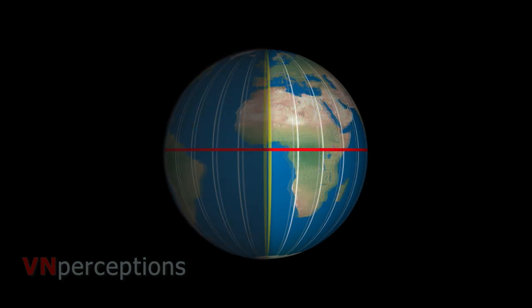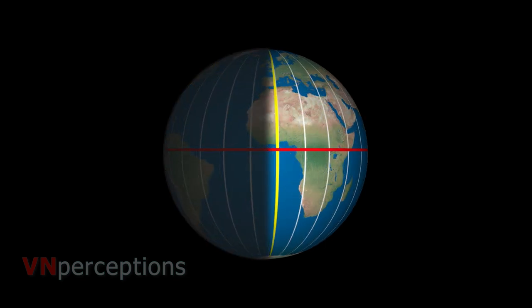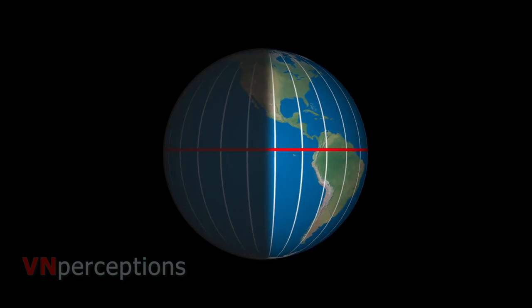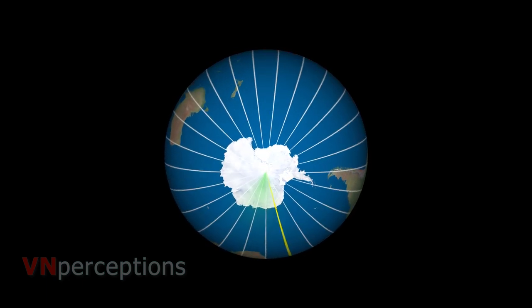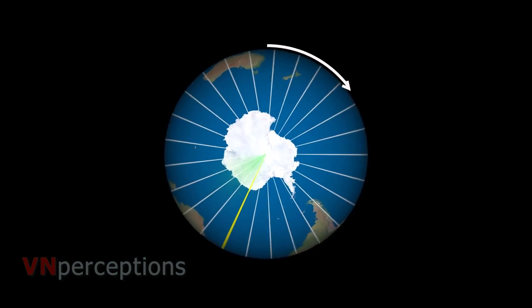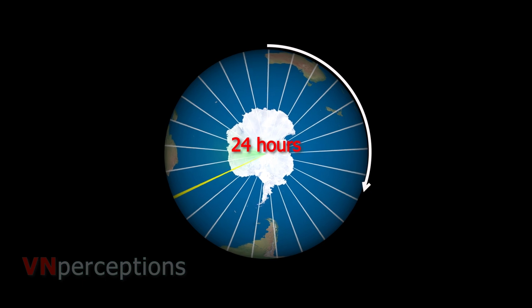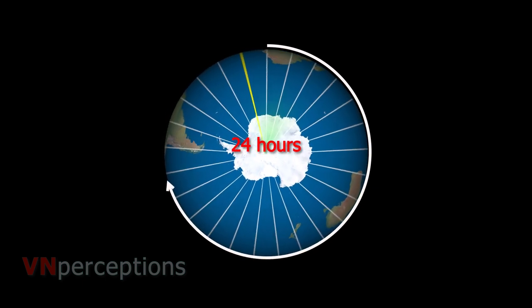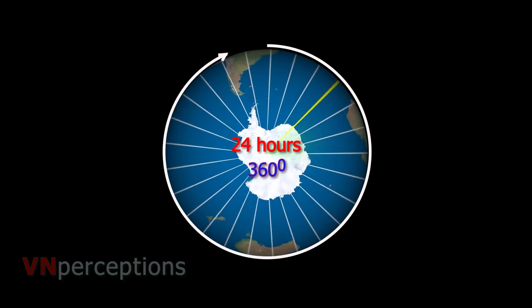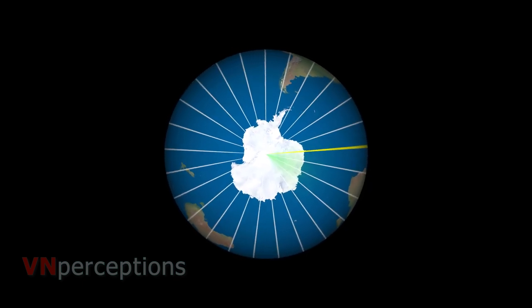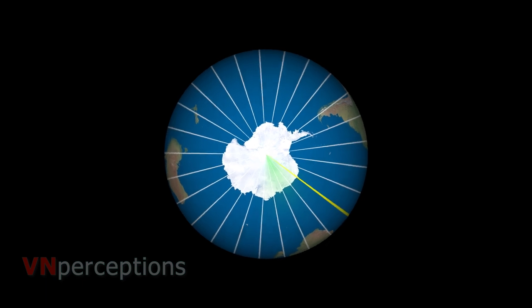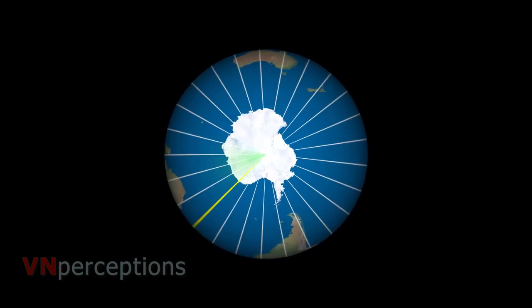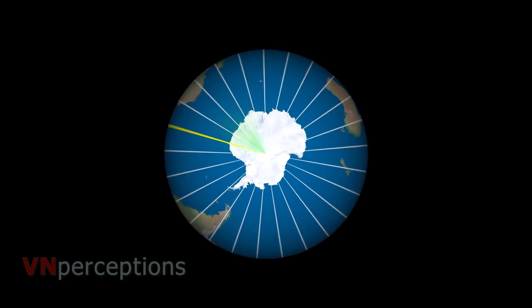As the earth rotates, every place has its sunrise, sunset and noon. The earth completes one rotation in approximately 24 hours. That means the earth rotates 360 degrees in 24 hours, or the earth travels an angular distance of 360 degrees in 24 hours.